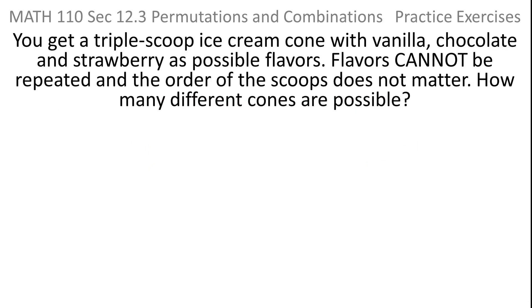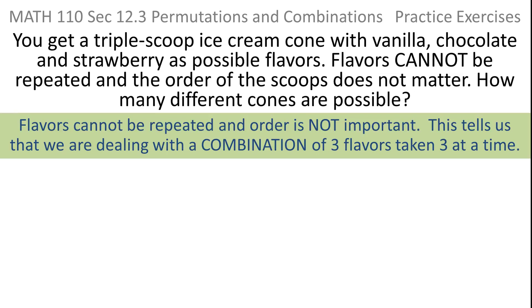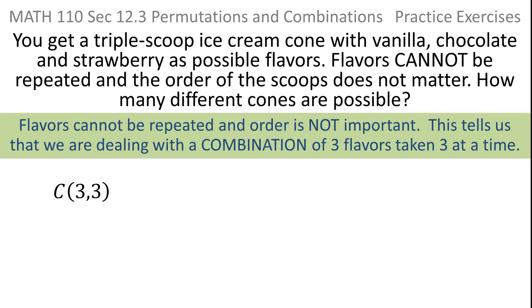Let's get our money's worth out of this problem. Same triple scoop cone with vanilla, chocolate, and strawberry — but let's make an even more drastic change. This time the flavors cannot be repeated, and the order of the scoops doesn't matter either. If the flavors can't be repeated and order is not important, that's the signature of a combination. So what I'm doing is taking a combination of three flavors, choosing all three at a time, because flavors can't be repeated and order is not important.